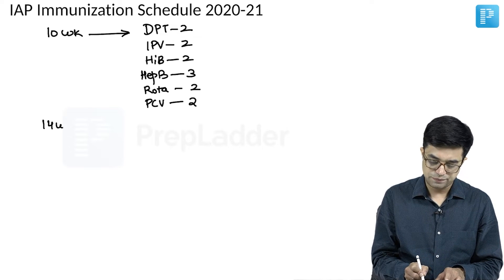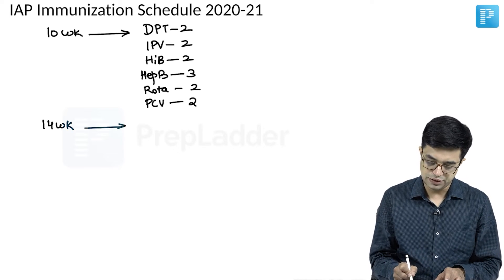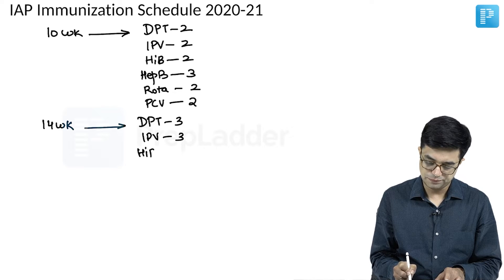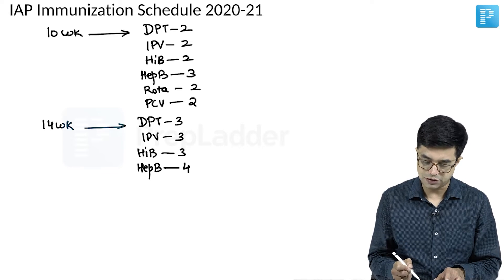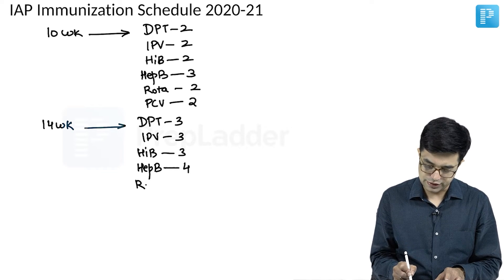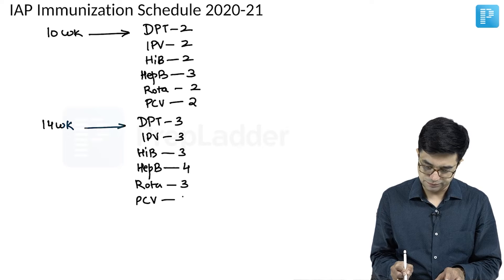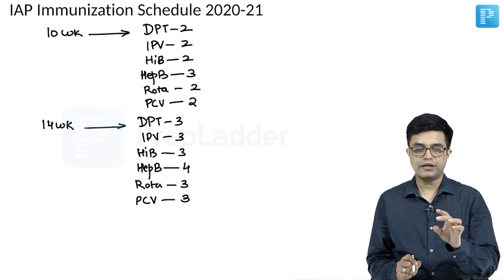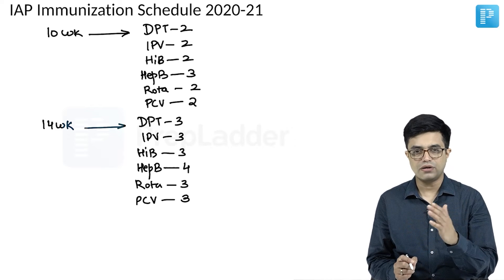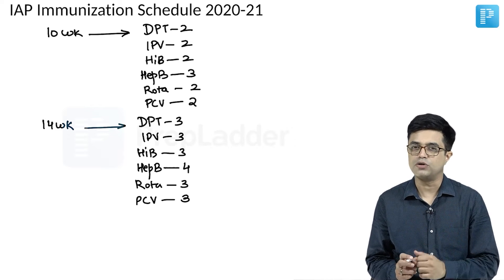Coming to 14 weeks, a very similar schedule is followed: DPT3, IPV3, Hib3, hepatitis B4 — making a total of 4 doses as part of primary vaccination — rotavirus 3, and PCV3. So from birth through 6 weeks, 10 weeks, and 14 weeks, the schedule at 6, 10, and 14 weeks is very similar to each other.